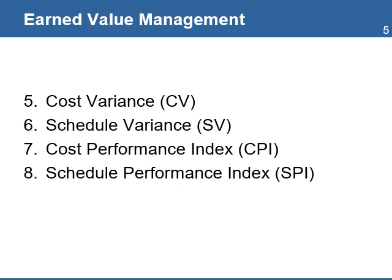Schedule Variance shows the difference between the planned and the actual completion of work. It is calculated by deducting planned value from earned value. Cost Performance Index, or CPI, is the ratio of earned value to actual cost, and is used to estimate the projected cost of completing the project. Schedule Performance Index is similar to CPI, and is used to estimate the projected time to complete the project.